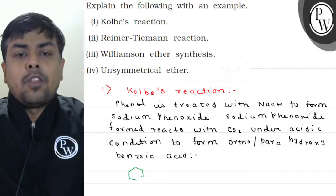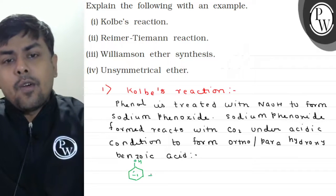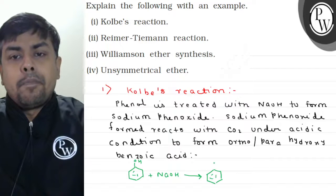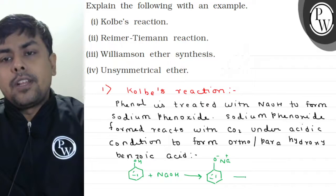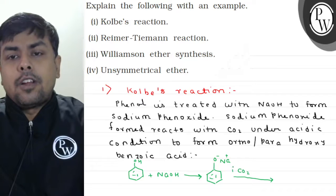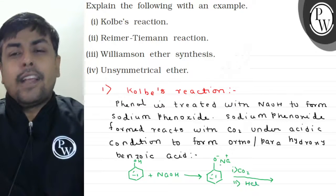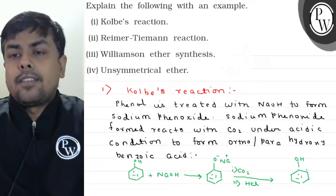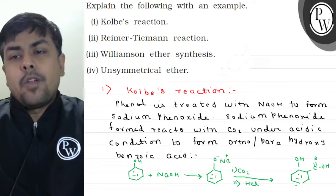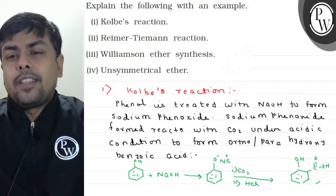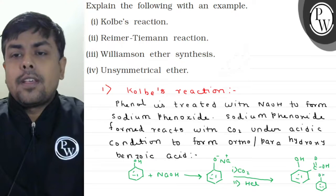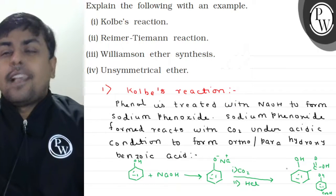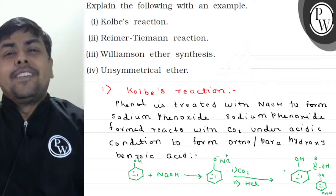We have phenol, which is treated with NaOH, then with CO2. The major product has OH at ortho position with COOH — that is orthohydroxybenzoic acid, also known as salicylic acid. The minor product is parahydroxybenzoic acid. This is all about Kolbe's reaction.